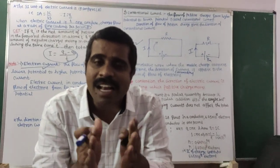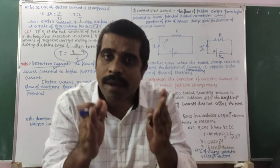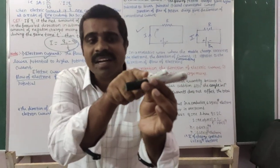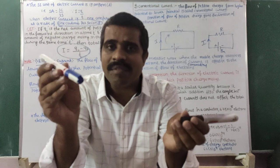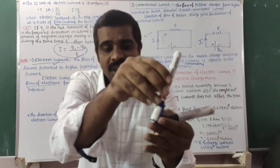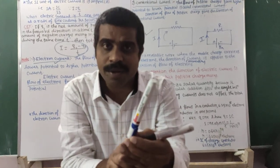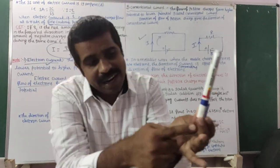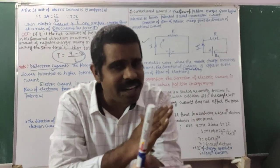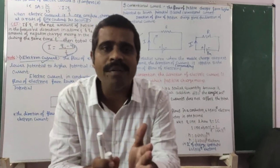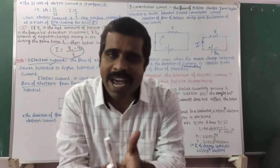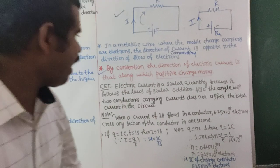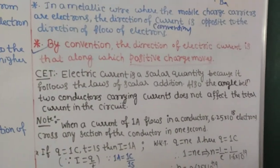This means the angle made between two conductors does not affect the total current. Whether the angle is theta or 90 degrees, the current at the junction is still 12 ampere. Therefore, electric current is a scalar quantity because it obeys simple scalar addition and the angle between two current-carrying conductors does not affect the total current in the circuit.